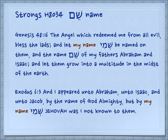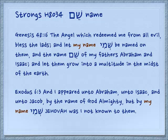And the name — shem — of my fathers Abraham and Isaac, and let them grow into a multitude in the midst of the earth. Again in Exodus 6:3: And I appeared unto Abraham, unto Isaac, and unto Jacob by the name of God Almighty. But by my name — shmi — Yehovah, was I not known to them.